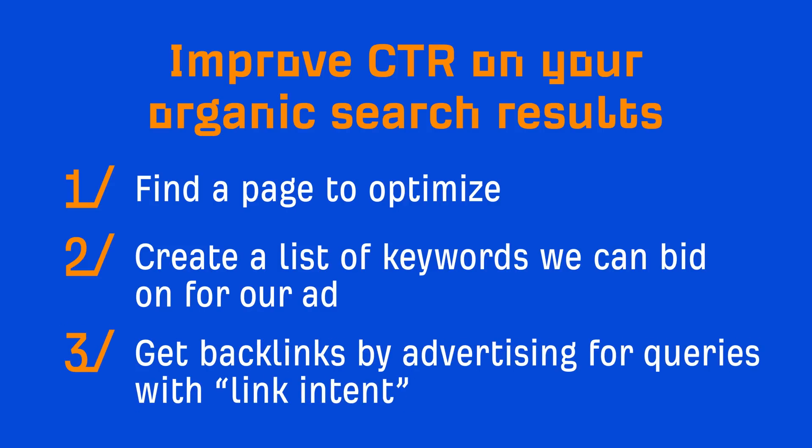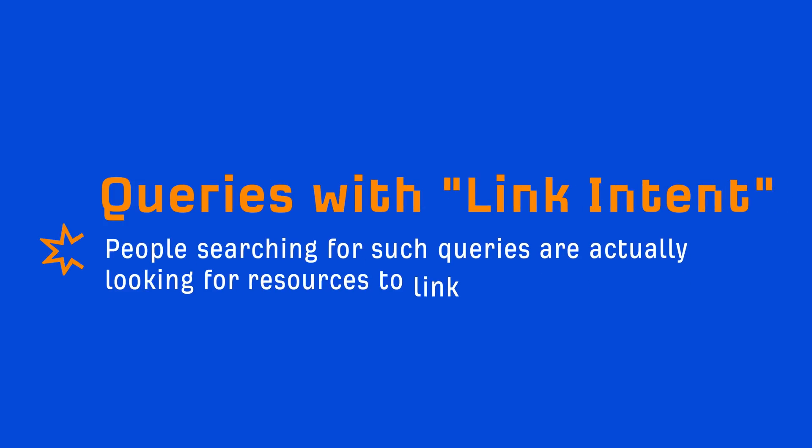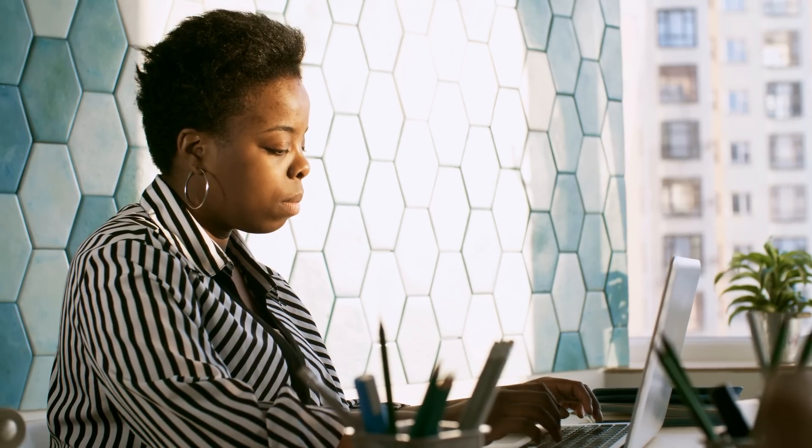The next thing you can do is get backlinks by advertising for queries with link intent. Some people will naturally earn links consistently simply because they rank at the top of Google, and that's one of the huge benefits of Google search ads — you can pay to have your page appear at the top of results. But you can't just advertise for any keyword and expect it to lead to backlinks, otherwise you'd burn through your budget with little to show. The goal is to earn backlinks at a reasonable cost by bidding on queries that have so-called link intent — meaning the people searching are actually looking for resources to link to. And who are these people? Bloggers and journalists.